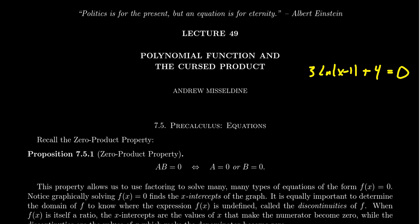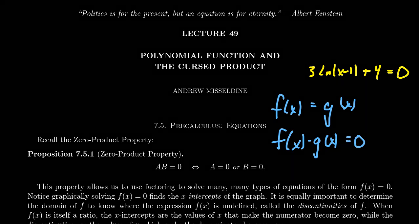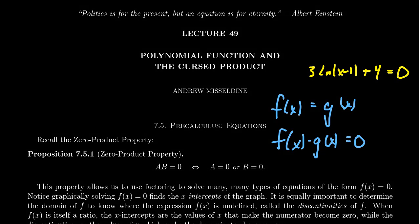Another thing I want to mention is that when solving equations, I'm going to emphasize the case where the right-hand side equals 0. Because if that wasn't the case — if you had an algebraic expression on both sides — you could always put it equal to 0 by subtracting things over. So if you can solve an equation where the right-hand side is 0, you can solve any equation.